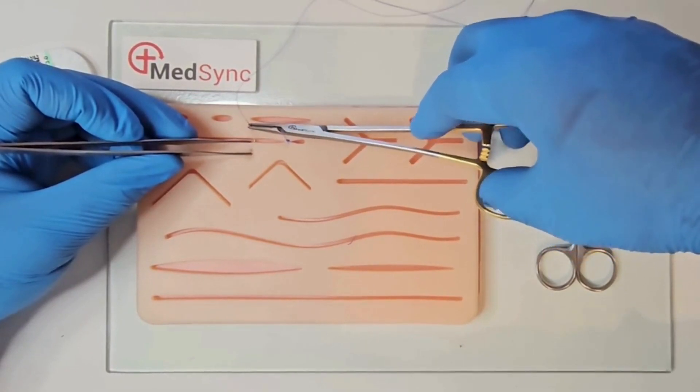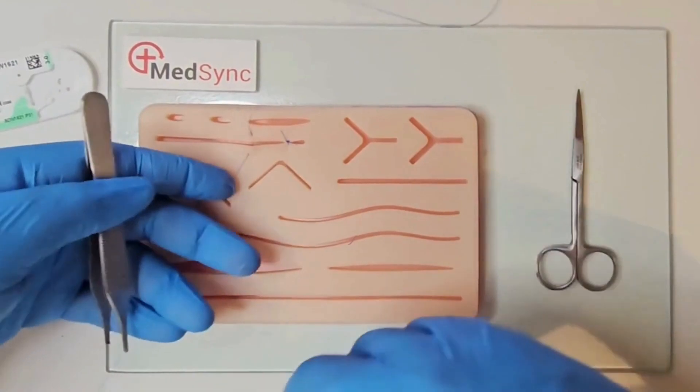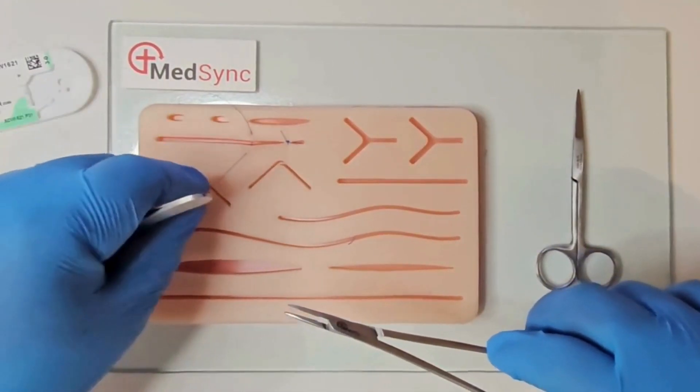Stabilize the needle with the forceps. Retrieve the needle out of the skin with the needle holder. With your left hand, pull the suture through.